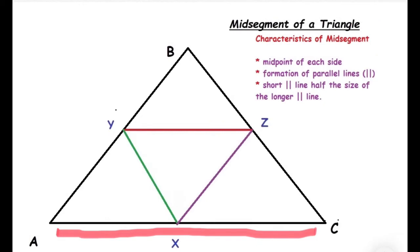Another characteristic is the shorter parallel line. For example, this red line is half the size of the larger red line, the other parallel line.